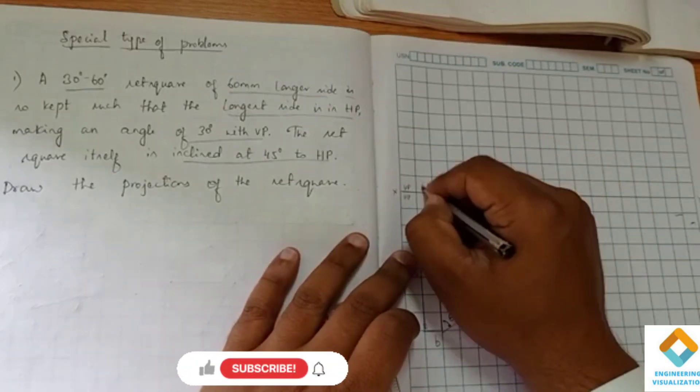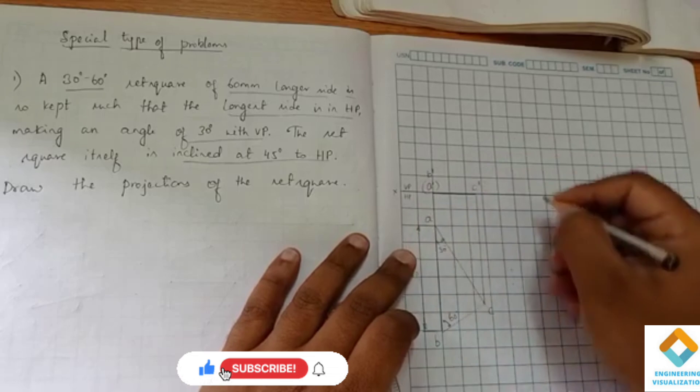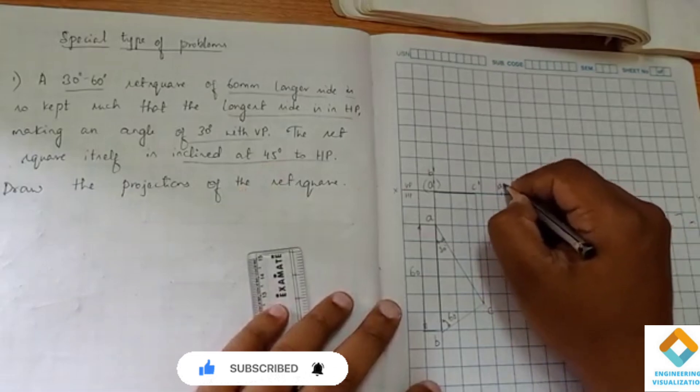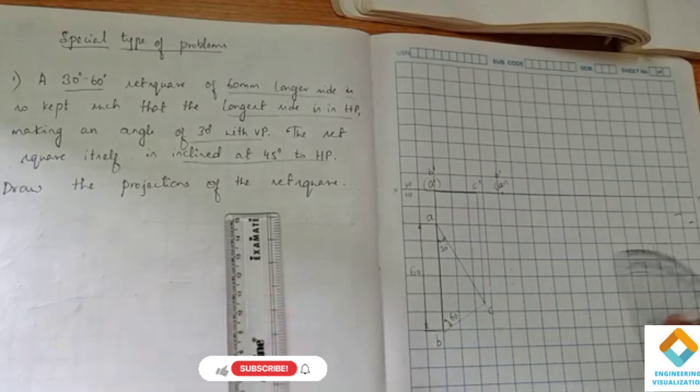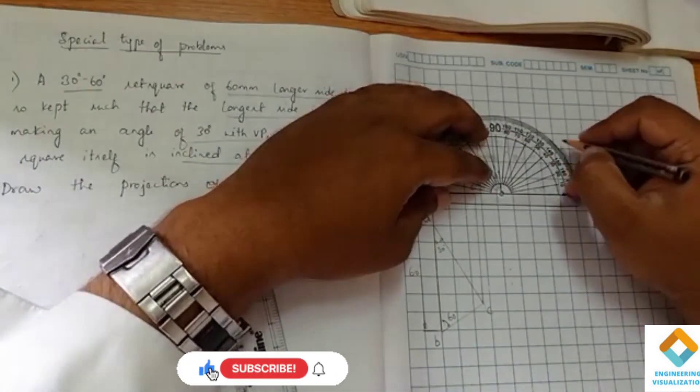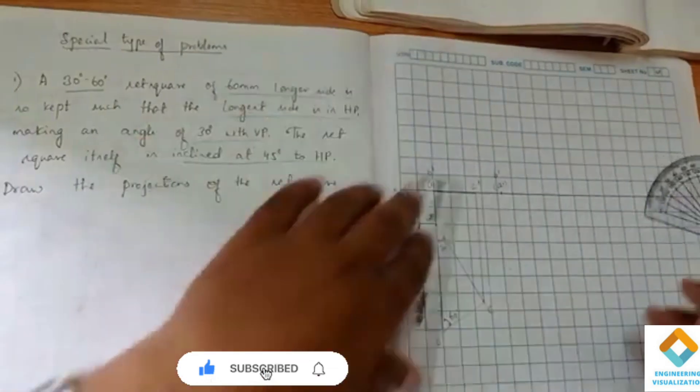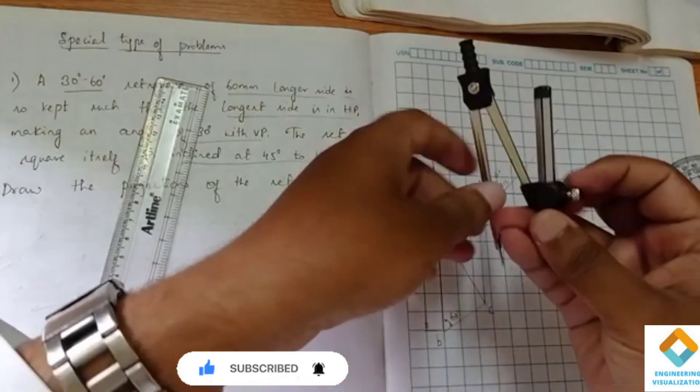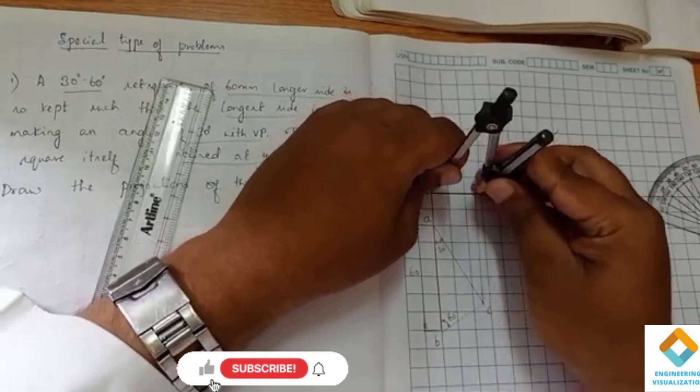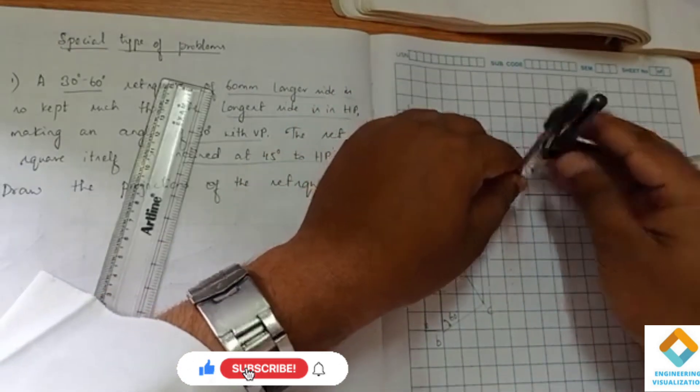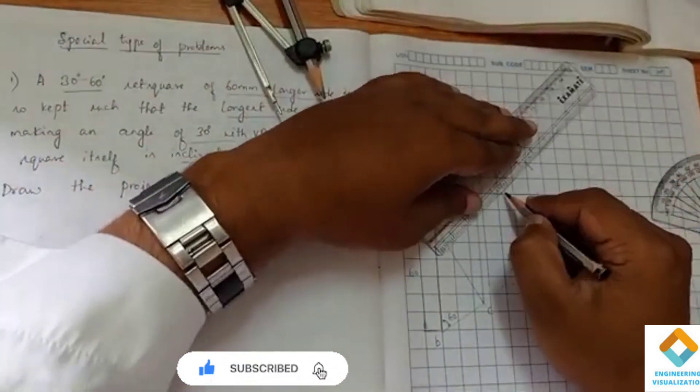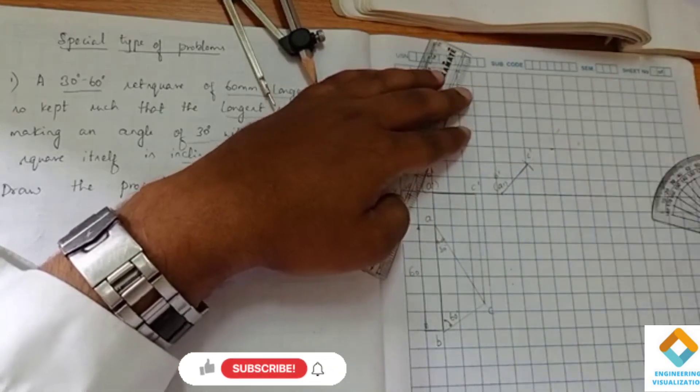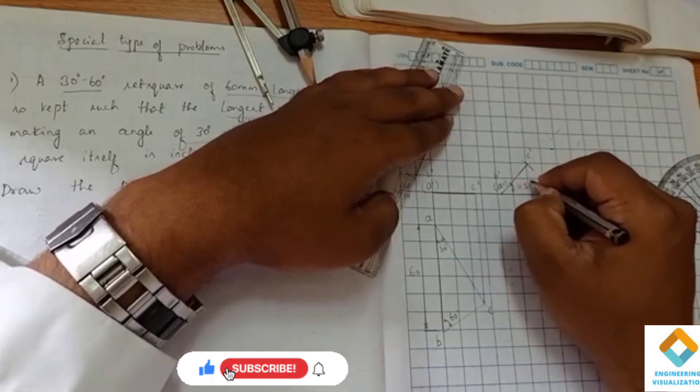This is A dash, B dash, C dash. Now angle of inclination to HP is 45 degree. So it is A dash B dash. We have taken the angle, it is 45. Mark for 45 degree. Now we have to cut the arc from A dash to C dash. Same procedure how we did the normal type. Everything remains same with respect to the normal type.